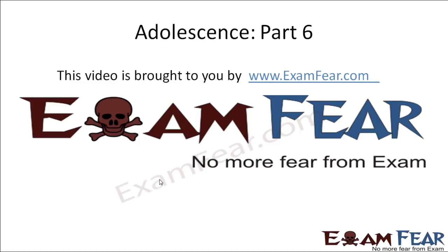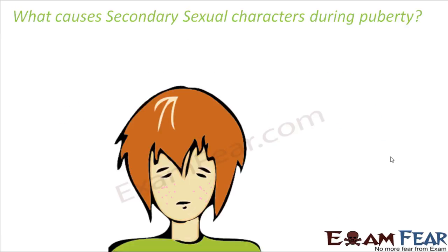Hello friends, this video on Adolescence Part 6 is brought to you by examfear.com — no more fear from exams. The question is: what causes secondary sexual characters during puberty? Why do these changes start taking place? Like why the appearance of hair, menstrual cycle, breast enlargement — how do all these changes happen? What magic happens inside the body as soon as a person enters adolescence?